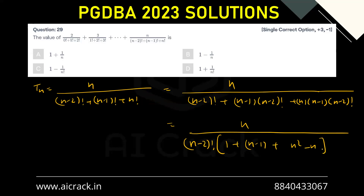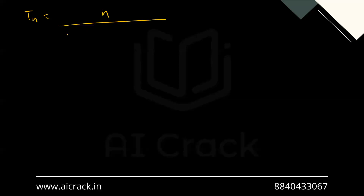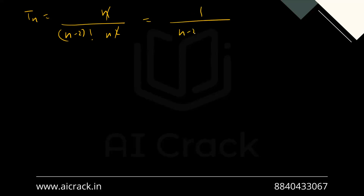We are left with 1 plus n minus 1 plus n times n minus 1, which is n squared minus n. This n and this n get cancelled out, and this 1 and this 1 get cancelled out. So Tn equals 2n upon n minus 2 factorial multiplied by n squared, and this n gets cancelled, leaving us with 1 upon n minus 2 factorial multiplied by n.